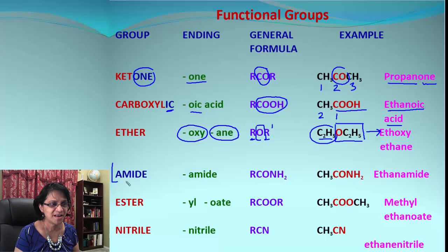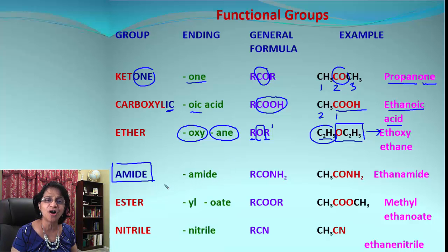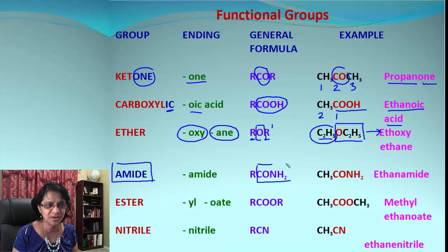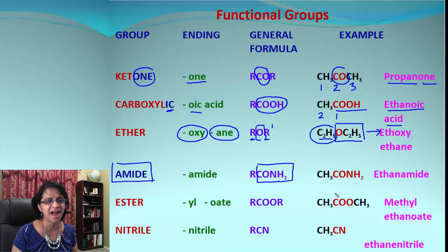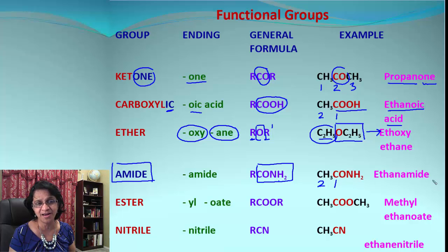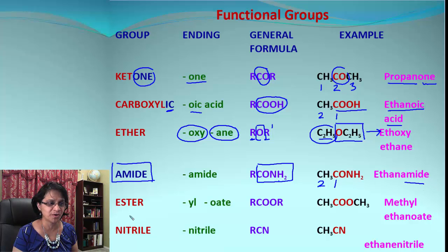The next one is amide. Amide bonds are present in all peptides — in our body we have lots of proteins and they show amide bonds. The functional group is CONH₂ and is formed when a carboxylic acid reacts with an amine. We count the carbon atom belonging to the functional group, so the parent chain is ethane, giving us ethanamide.